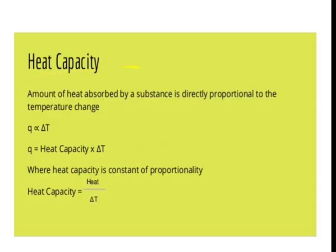The first topic is heat capacity. Heat capacity is the amount of heat absorbed by a substance, which is directly proportional to the temperature change. That is, Q is directly proportional to delta T, where delta T is Tf minus Ti. So Q is equal to heat capacity into delta T, and heat capacity equals Q divided by delta T.